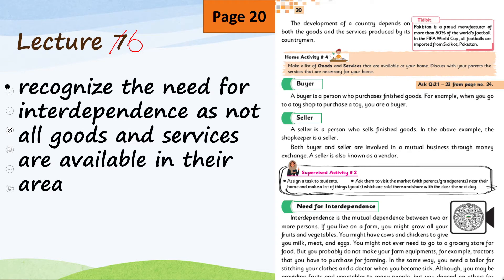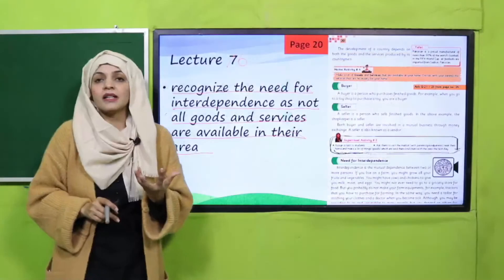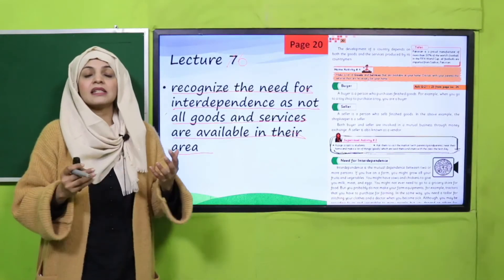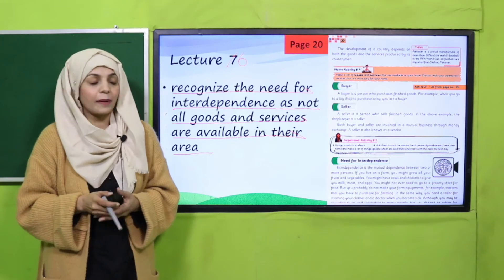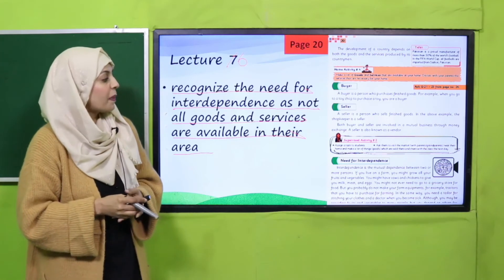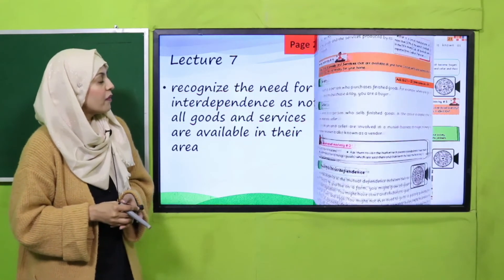Then we will move towards lecture number six. In this lecture, students will recognize the need for interdependence, as not all goods and services are available in their area. The page included is page number 20.